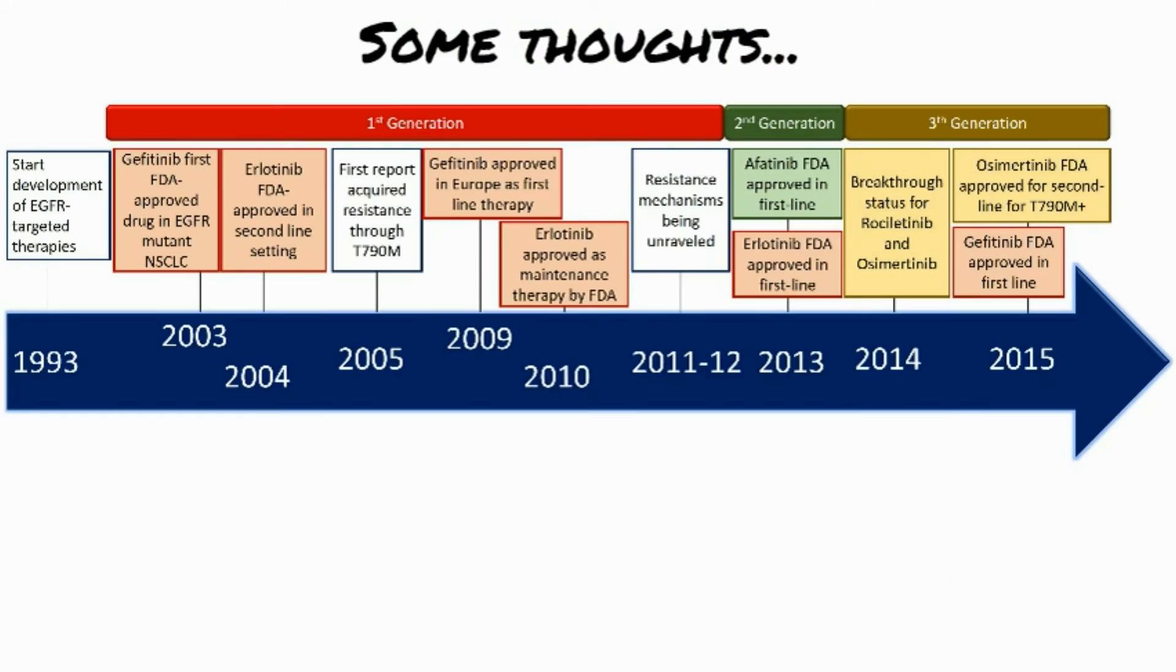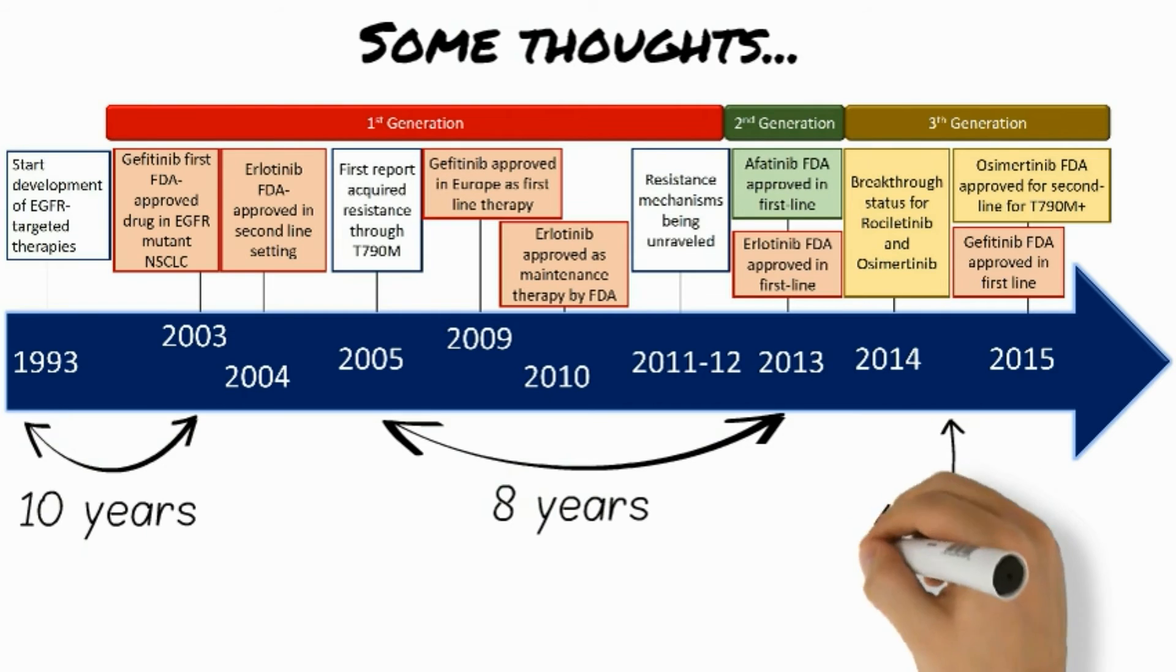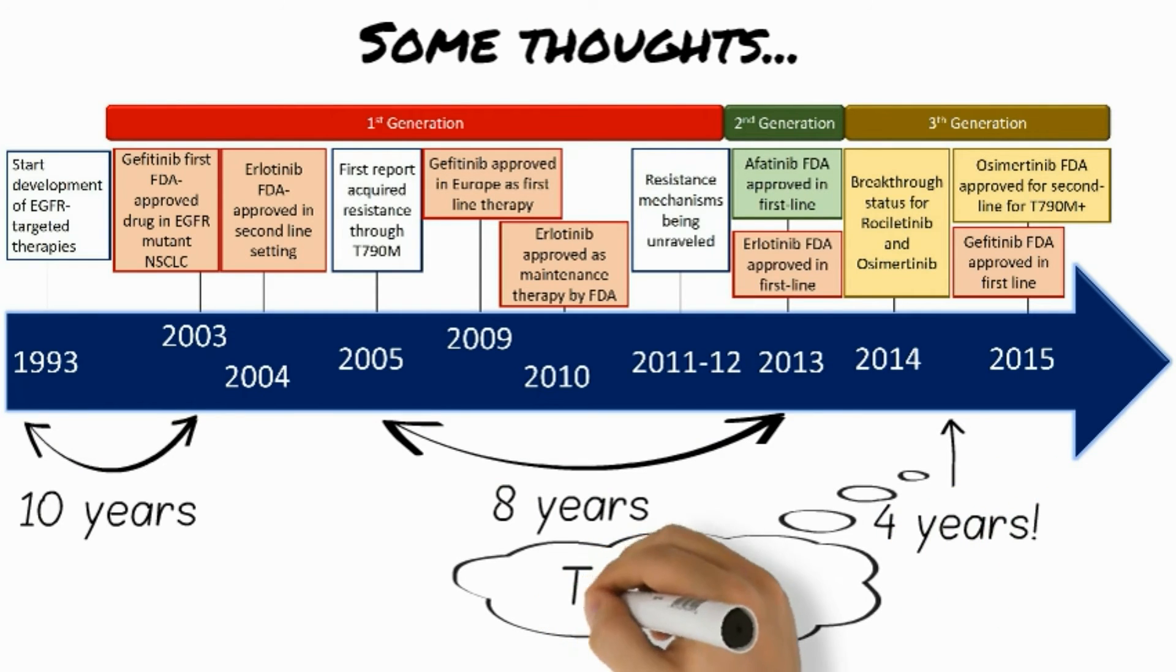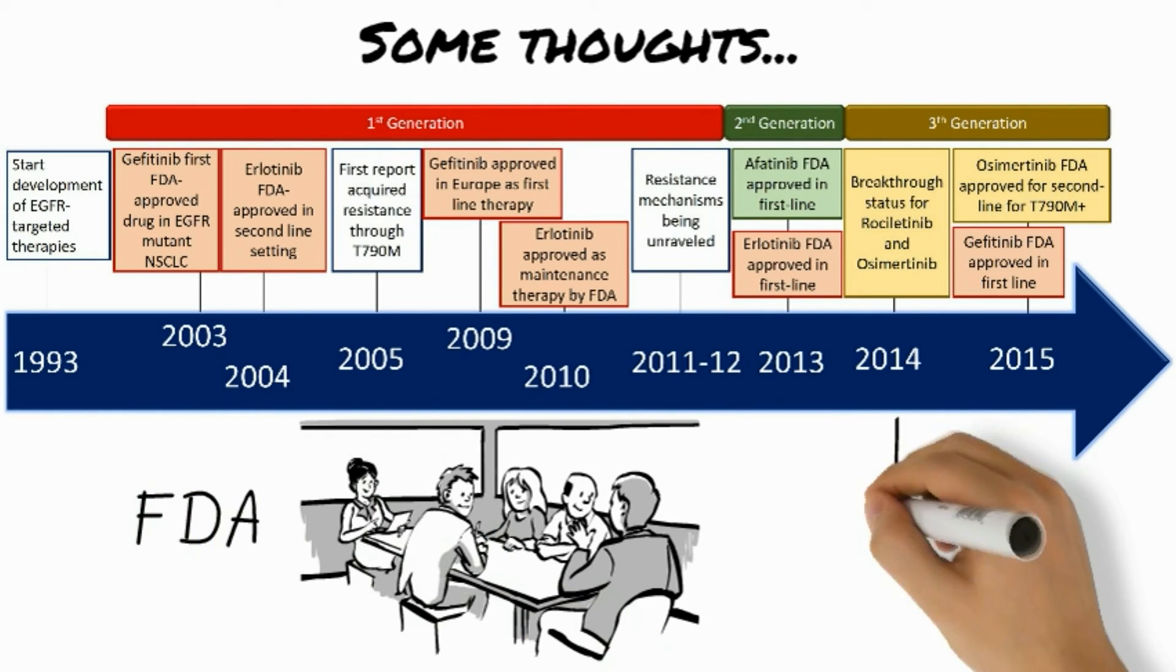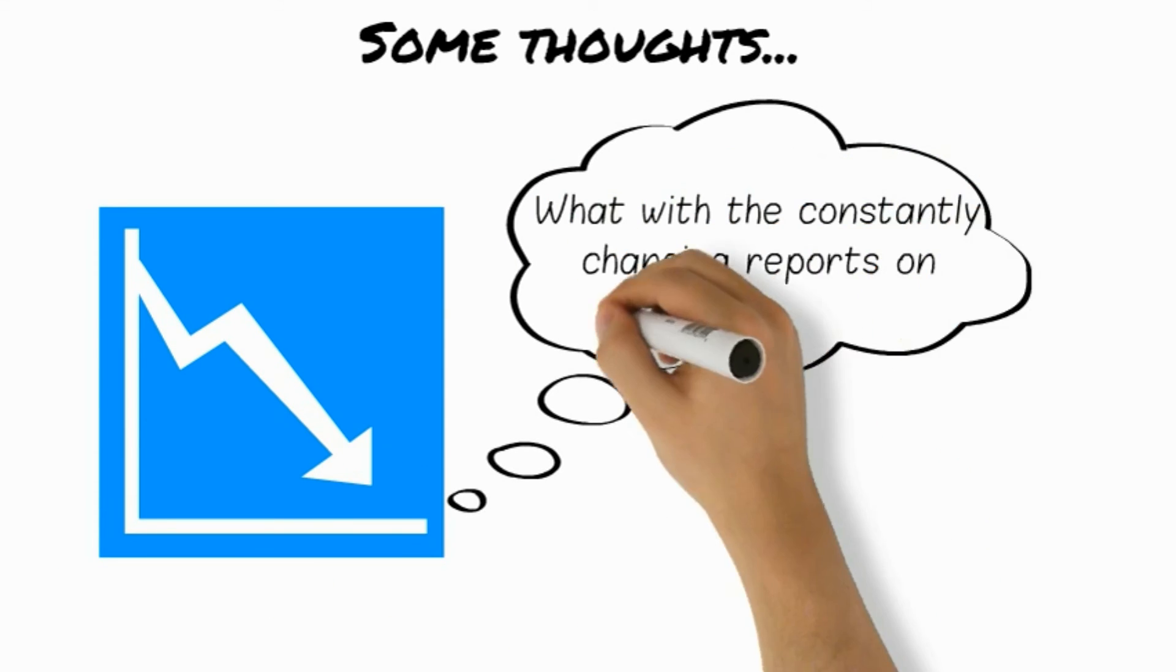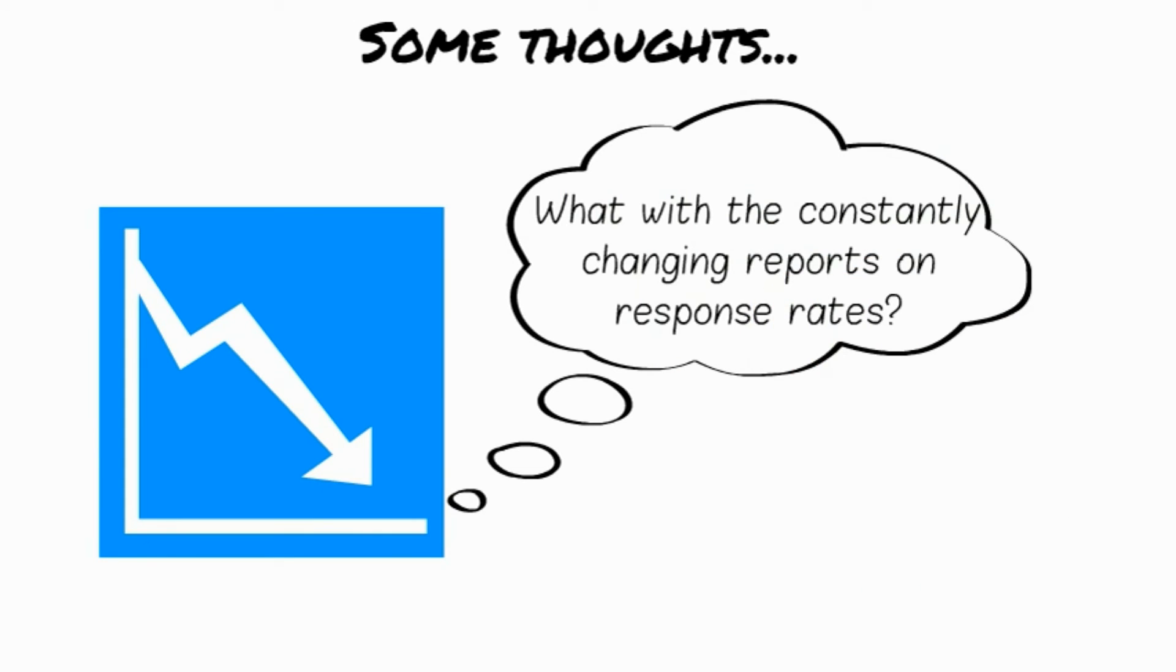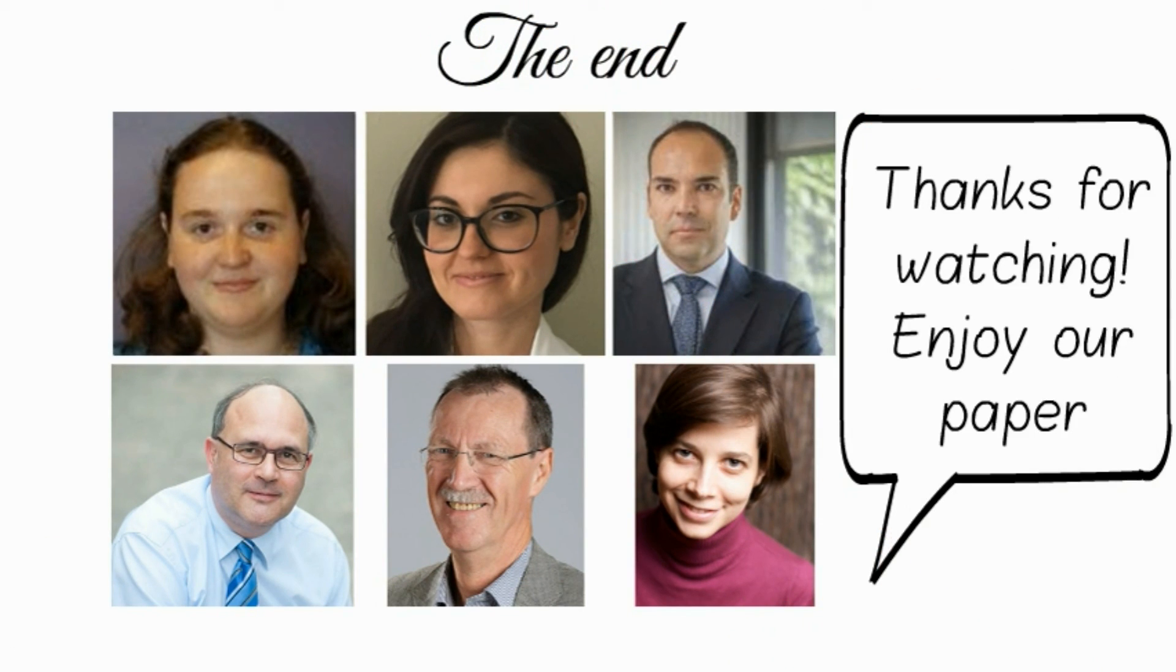Some questions arise regarding the developmental process of Rociletinib. While it took 10 years for the first generation and 8 years for the second generation, it only took 4 years to develop Rociletinib. Was this too fast given its full stop on May 6, 2016? Secondly, which criteria does the FDA use to give breakthrough status to a drug? And finally, what about the constantly changing response rates of Rociletinib? We have come to the end of our movie. Thank you for watching and we hope you will also enjoy our review on Rociletinib.